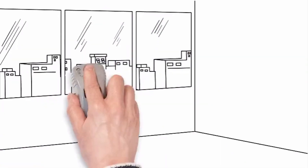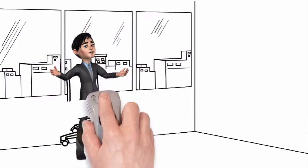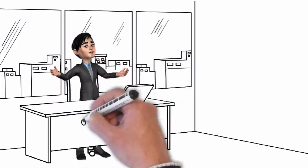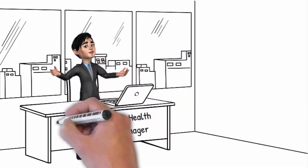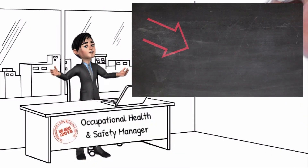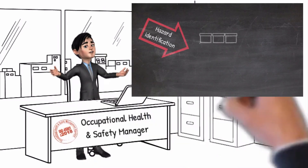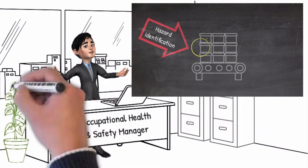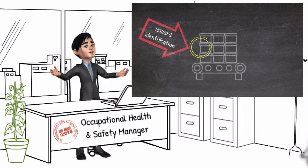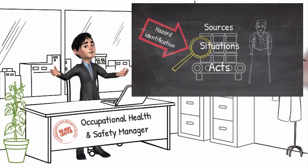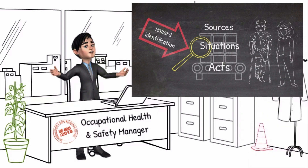The manager realized that he needs to implement controls to prevent similar incidents from happening again. In this episode we are going to review how to identify hazards and prevent or minimize incidents. The process for hazard identification should proactively determine all sources, situations, and acts arising from an organization's activities with a potential for harm in terms of injury or ill health.